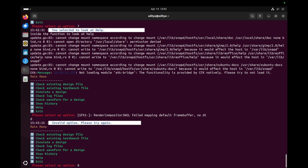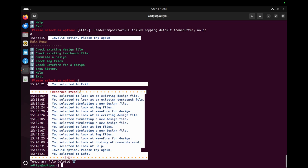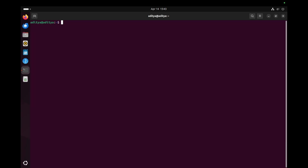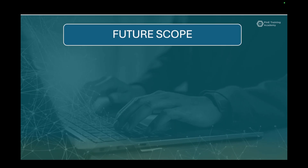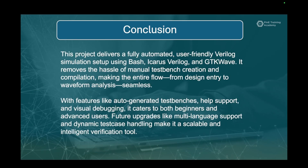Option eight is the exit option. Upon exiting, the recorded session steps are deleted and we exit from the tool. That wraps up the demo. This Bash-based tool simplifies Verilog simulation for both beginner and advanced users. To conclude, our project delivers a fully automated and user-friendly Verilog simulation setup using Bash scripting. It removes the hassle of manually writing test benches and compiling designs, making the entire flow from design entry to waveform analysis smooth and efficient. With features like auto-generated test benches, log tracking, GTKWave visualization, and built-in help, this tool is ideal for both beginners and advanced users in digital design verification. It is also scalable with room for future upgrades like multi-language support and advanced test case handling. Thank you everyone for your attention — if you found this video useful, please like and subscribe to my YouTube channel.